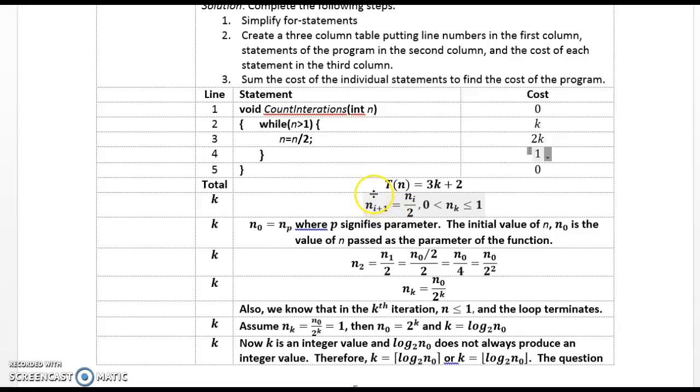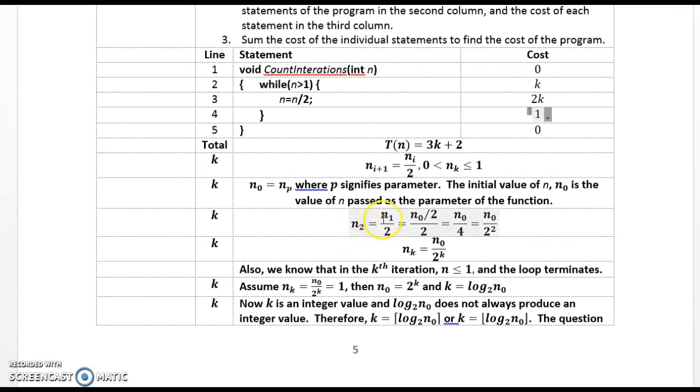So we're going to use some of our previous modules learning there. We're going to write a recurrence relations for n sub i, that is the value of n sub i for the ith iteration. So what we know is n sub i plus 1 is equal to n sub i divided by 2, where n sub k is limited, must be, where the kth value must be limited between 0 and 1. n sub 0 equal to n sub p, where p signifies parameter, the initial value of n, n sub 0, is the value of n passed as the parameter of the function. n2 is equal to n1 over 2 is equal to n sub 0 over 2, which is equal to n sub 0 over 4. We can see that n2 is n sub 0 over 2 squared. And in general, n sub k is equal to n sub 0 over 2 to the k.